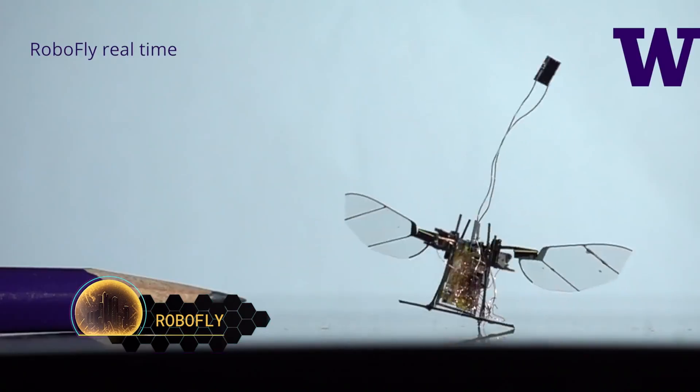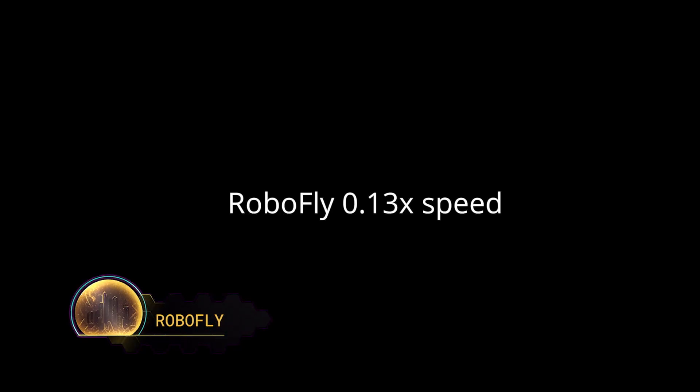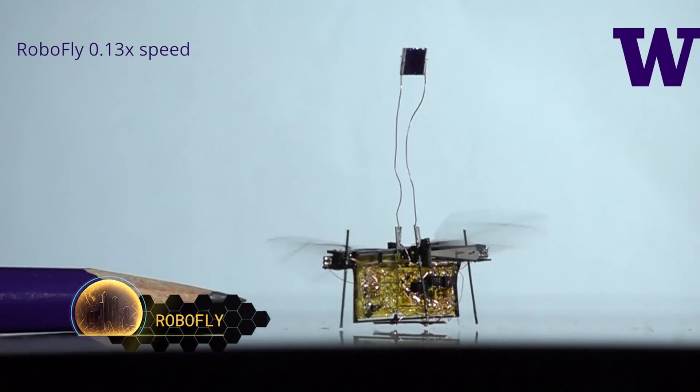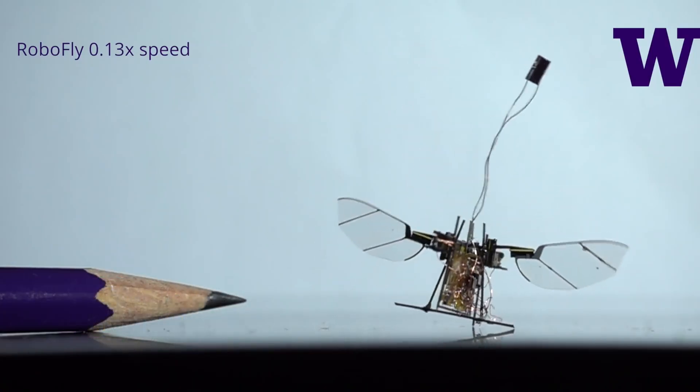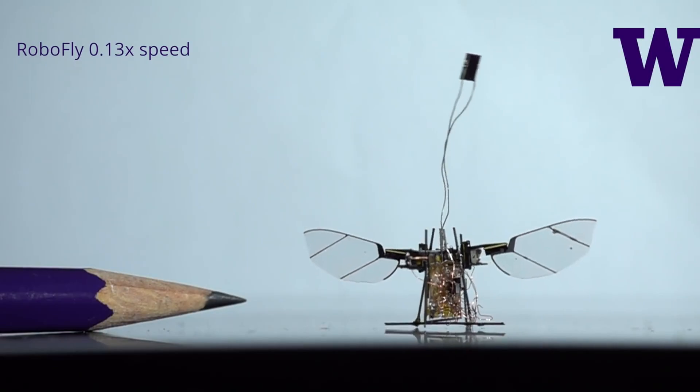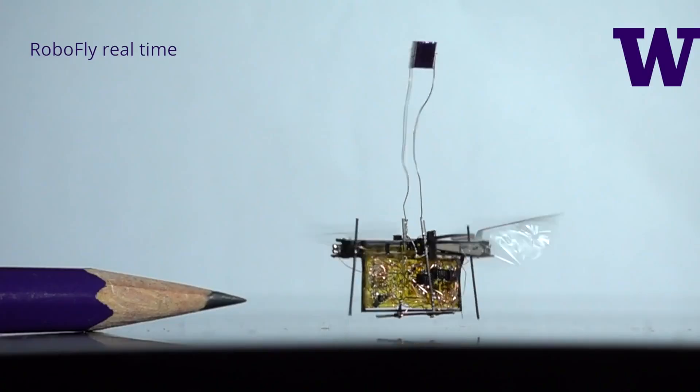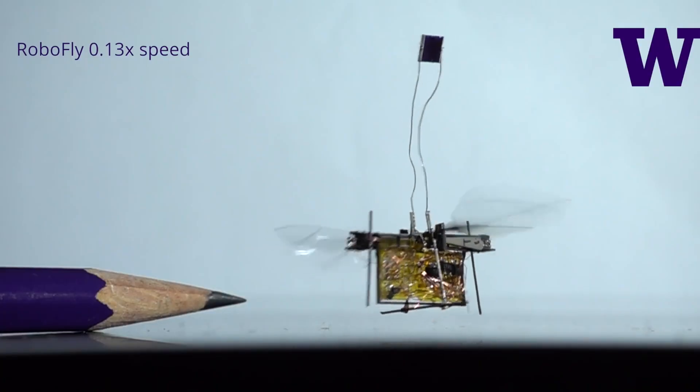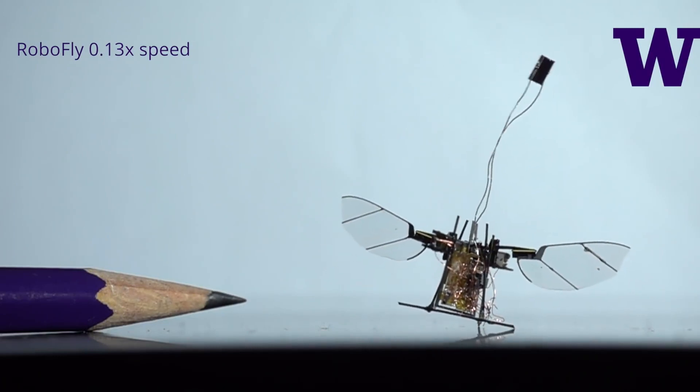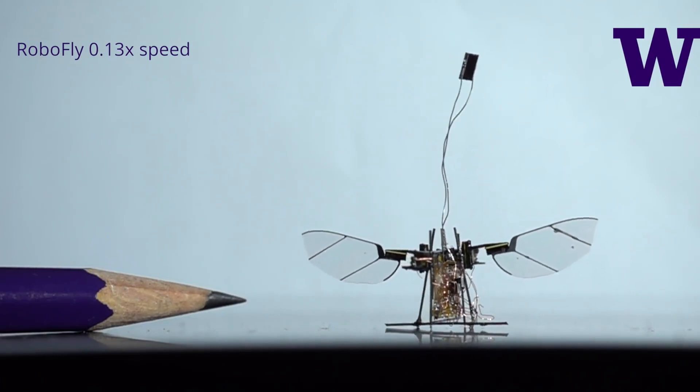Number 5, Robo-Fly. Flying robots the size of insects could aid with time-consuming activities, like smelling out gas leaks or monitoring crop development on huge farms. Robo-Fly is about the size of a real fly, slightly heavier than a toothpick, and powered by a laser beam that must be directed at its body. It makes use of a small onboard circuit to convert the laser energy into an amount of electricity sufficient to power its wings.